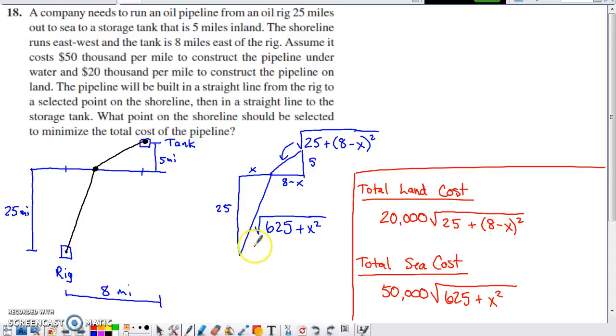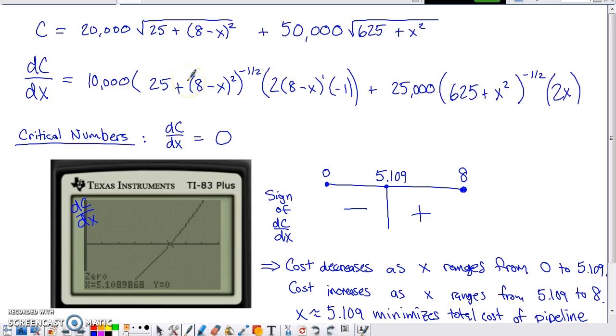What I did before leaving this screen and doing that analysis is I went ahead and developed my total cost to build on land. Here's the length of the pipeline that's going to be built on land using the Pythagorean theorem. $20,000 per mile times that length, and then $50,000 per mile times this length was going to be the total cost of building under the water. The total overall cost would just be the sum of those two individual costs.